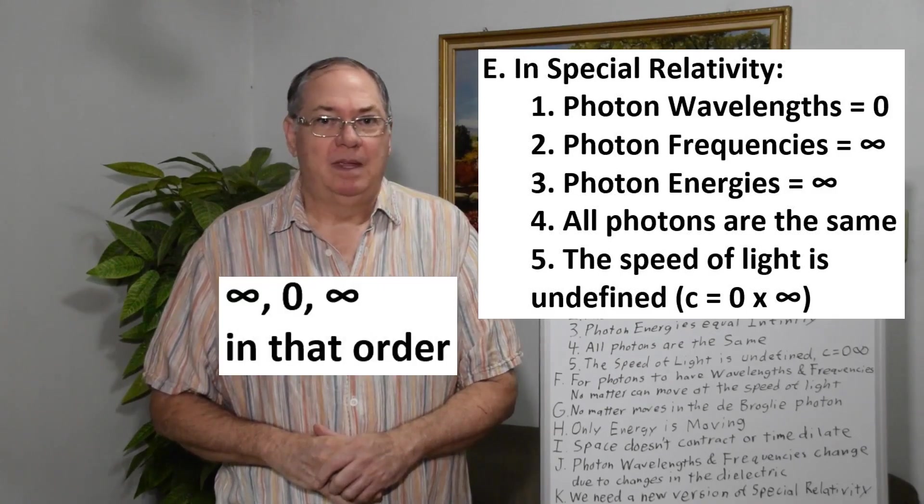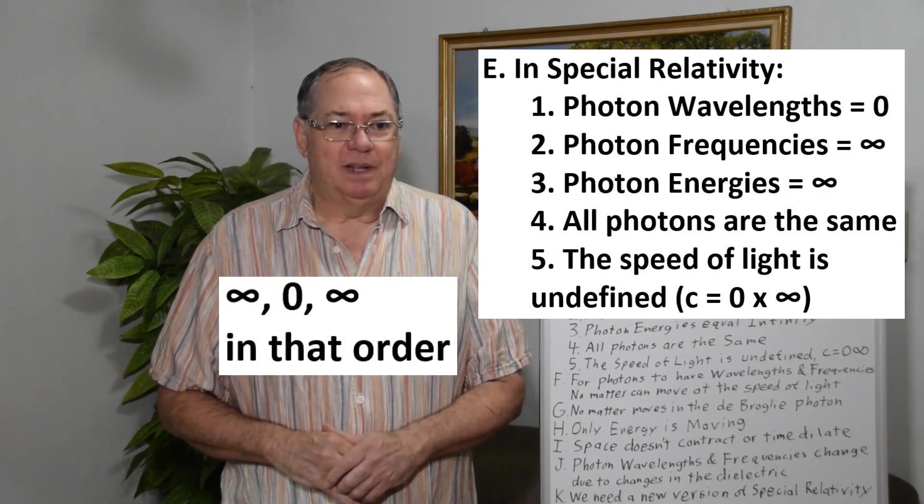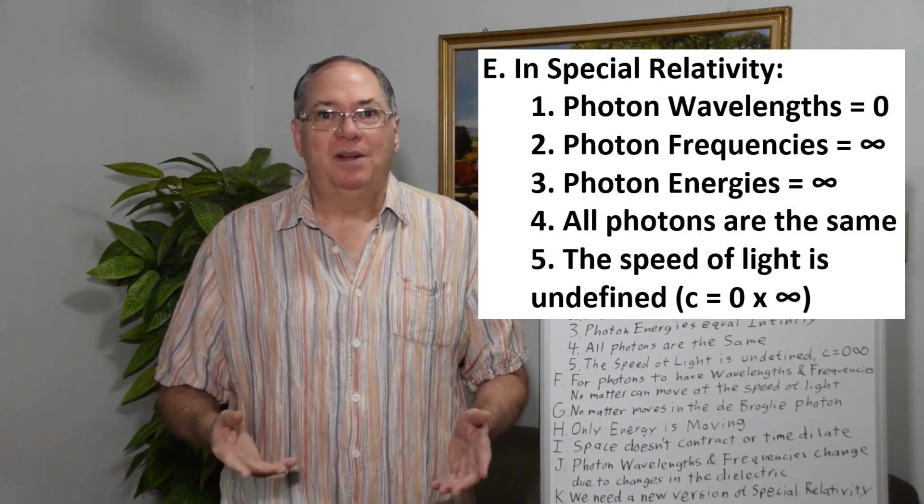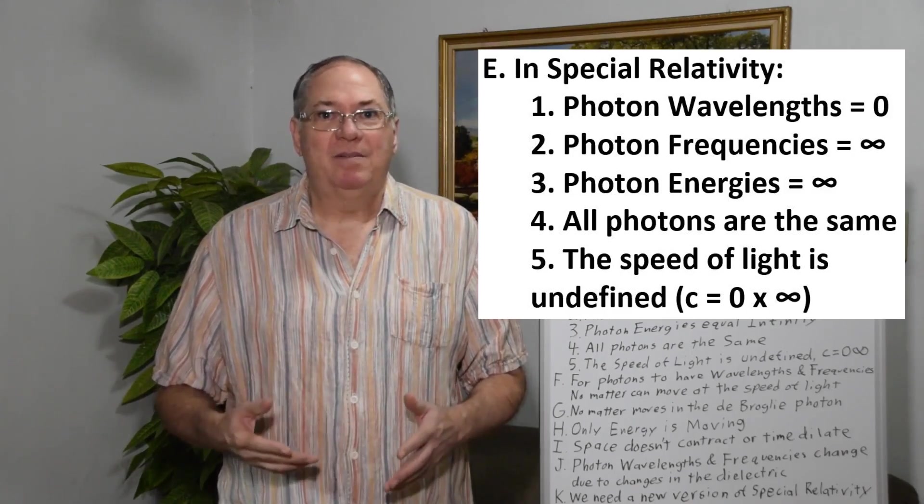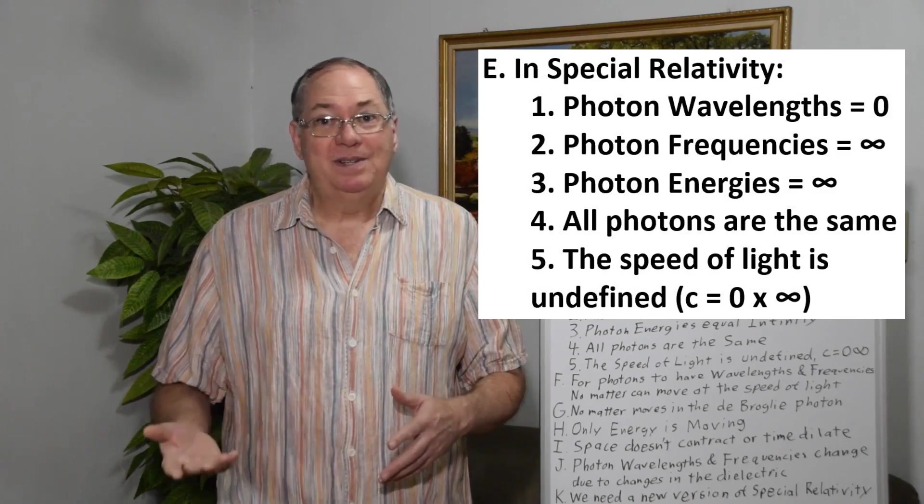Infinite, infinite, and zero for the wavelength. And the speed of light becomes undefined as well, because the wavelength and the frequency are zero times infinity, which is undefined.